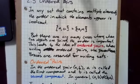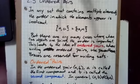But there are many cases where when two objects are paired, the order is important, which leads to the idea of ordered pairs. When writing ordered pairs use parentheses. Braces are reserved for writing sets.